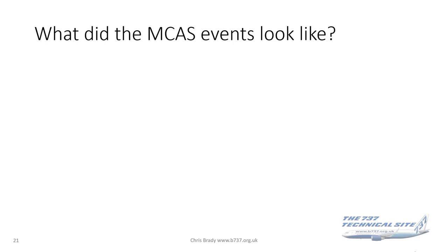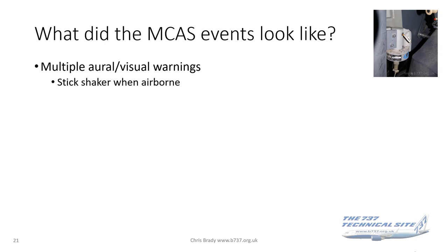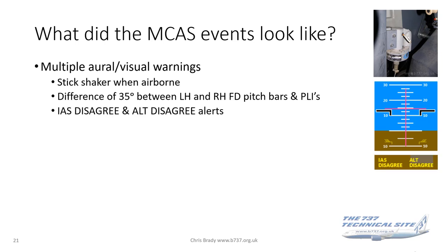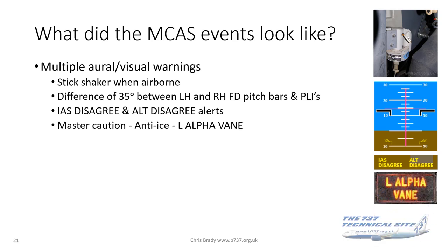What did those events look like on the flight deck? There were multiple aural and visual warnings, including the stick shaker as soon as the aircraft got airborne right the way through to the end of the flight. There was a difference of 35 degrees between left and right hand flight director bars, a difference in the PLIs — the pitch limit indicators. There were airspeed disagree and altitude disagree alerts, and a master caution left alpha vane on the Ethiopian flight. The AOA disagree alert was missing in error — an omission by Boeing covered in the previous presentation.